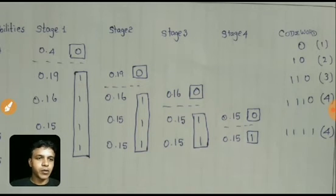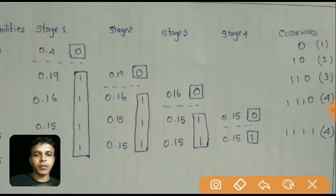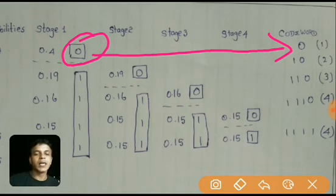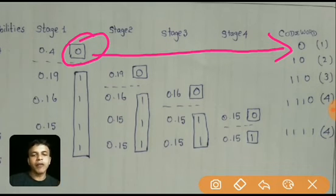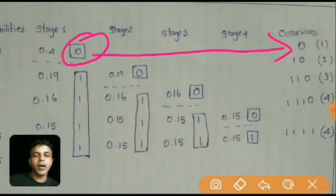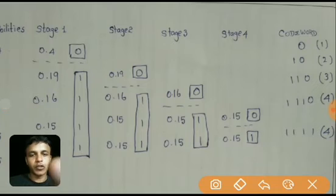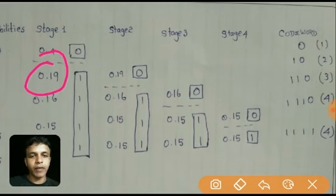The next step is to generate the codeword from the values assigned to the upper and lower parts. For symbol x1 with probability 0.4, only 0 was assigned, so the codeword is 0. Symbols with high probability occur frequently from the source and can be represented by a smaller number of bits. For symbol x2 with probability 0.19, the codeword is 1 0.